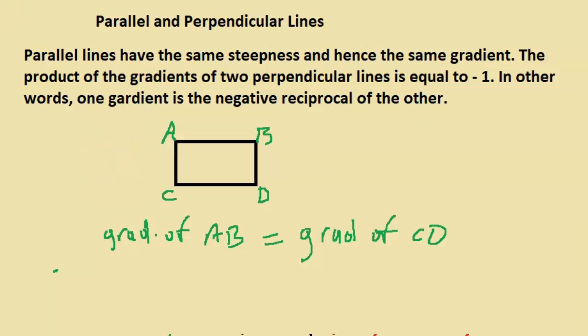As we can see also, the gradient of, what are the other two parallel lines now? So AC or CA will be the same gradient as BD. And as you can see, these two lines have the same steepness, same slopes, so they are parallel.